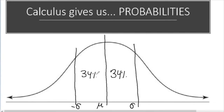Note that percentages are always positive — you can have scores below the mean, which gives negative z-scores, but you still have a positive count of people. You can't have negative people! Because calculus tells us it's roughly 34% for one standard deviation above and 34% for one standard deviation below the mean, the middle area is 68% of the distribution — we now know where more than half the people will fall.